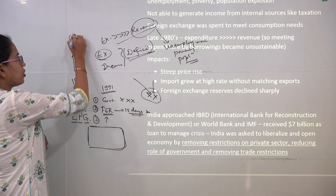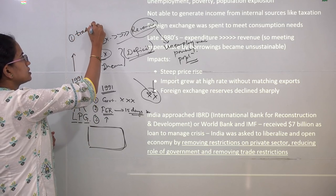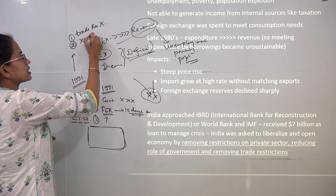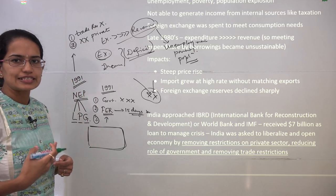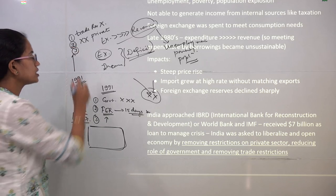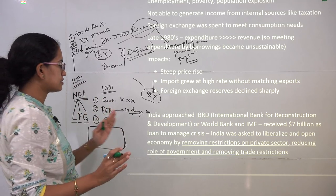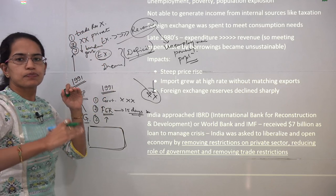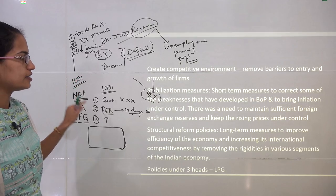First was opening up trade restrictions that India was having — trade restrictions should be removed. The second was removing restrictions on the private sector, allowing private sector flow into banking, finance, and other industries. The third key aspect was decreasing the burden on the government. So three things led to the 1991 crisis, and three things helped the Indian economy survive that economic crisis under the New Economic Policy.